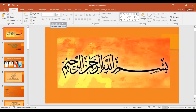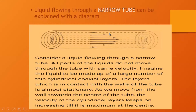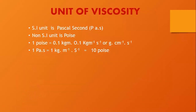The layers adjacent to the walls experience less velocity — they move with less velocity. As we move towards the center, the molecules or the layers move with full speed. The central molecules move with maximum velocity.